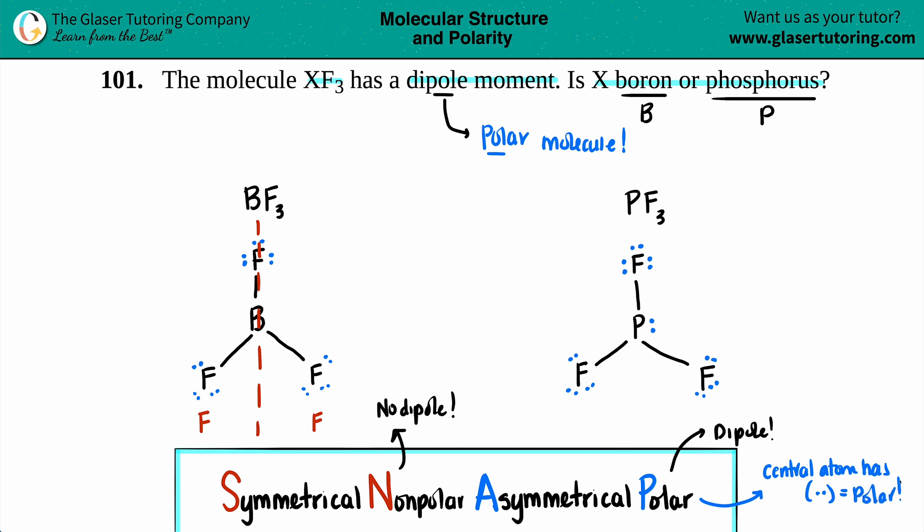So I have phosphorus having the one lone pair. Right off the bat, I know that this is a polar molecule. And polar molecules have the dipole moment. So PF3 would have a dipole moment.